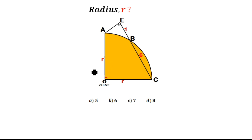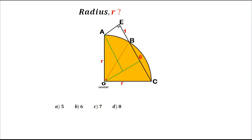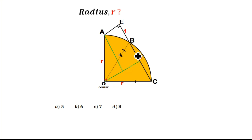We'll start by dividing this figure from O to B. Remember, any line originating from the center to the circumference is always the radius, meaning from O to B is R and from O to C is R. So if you drop a perpendicular line from O to meet line BC, it will divide BC into two equal parts — three centimeters and three centimeters.